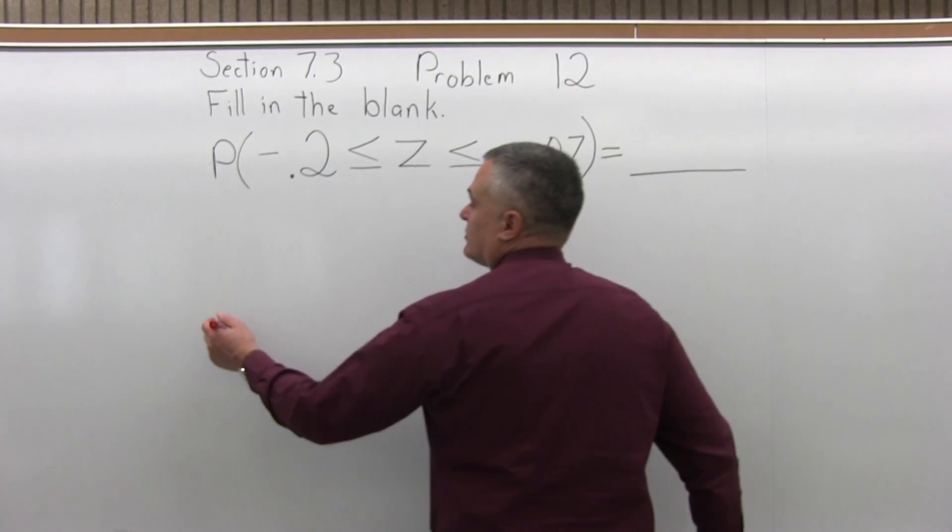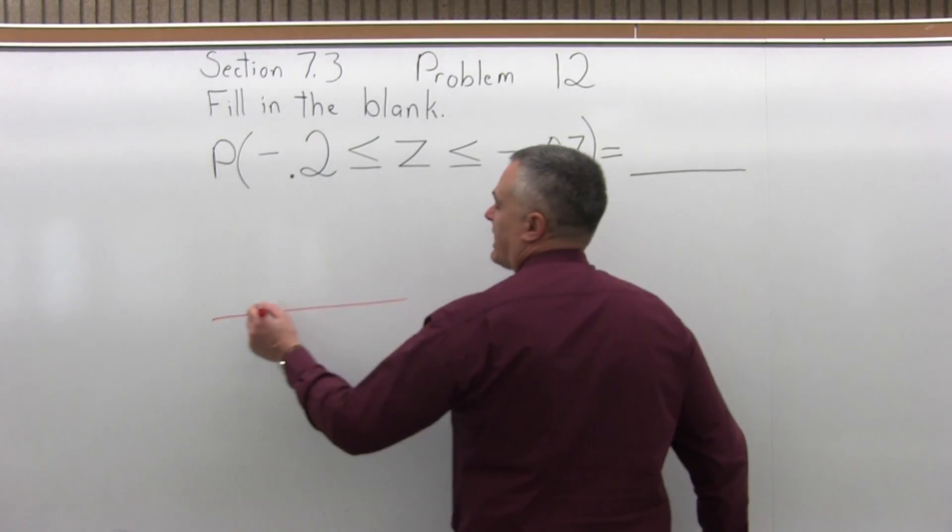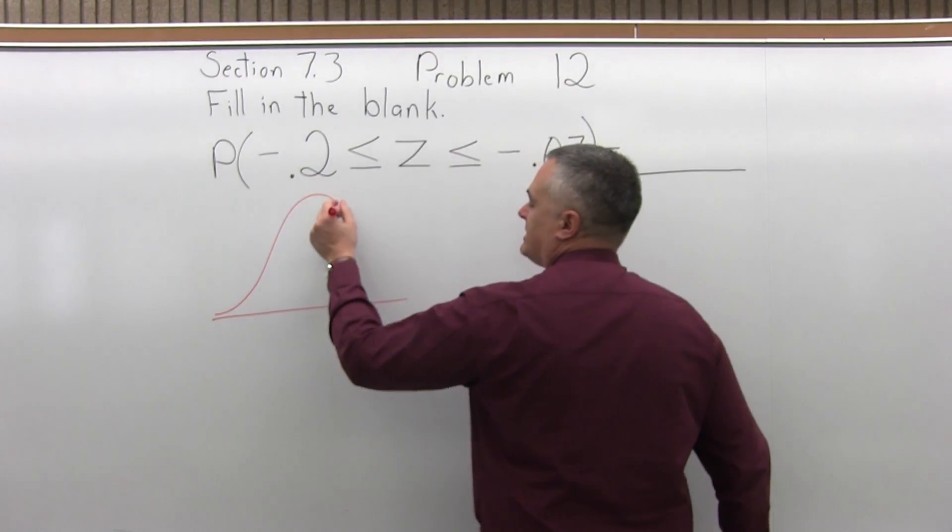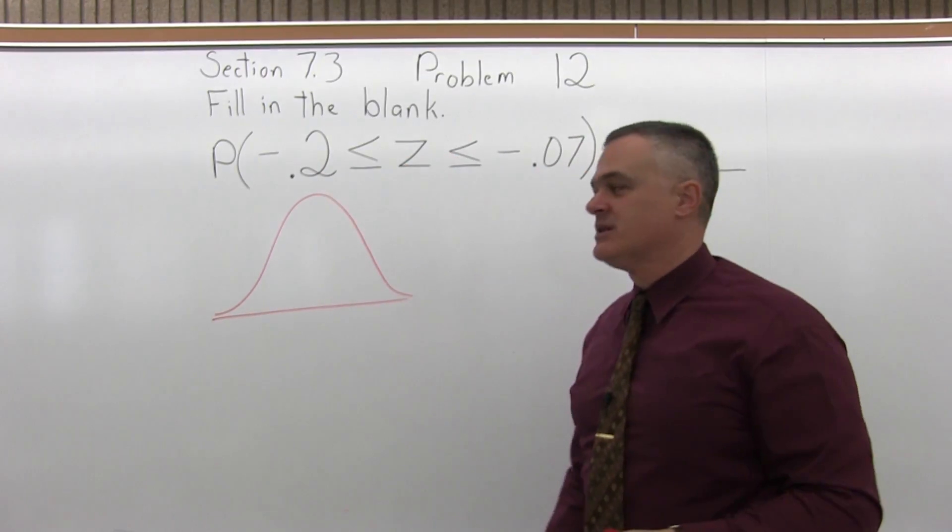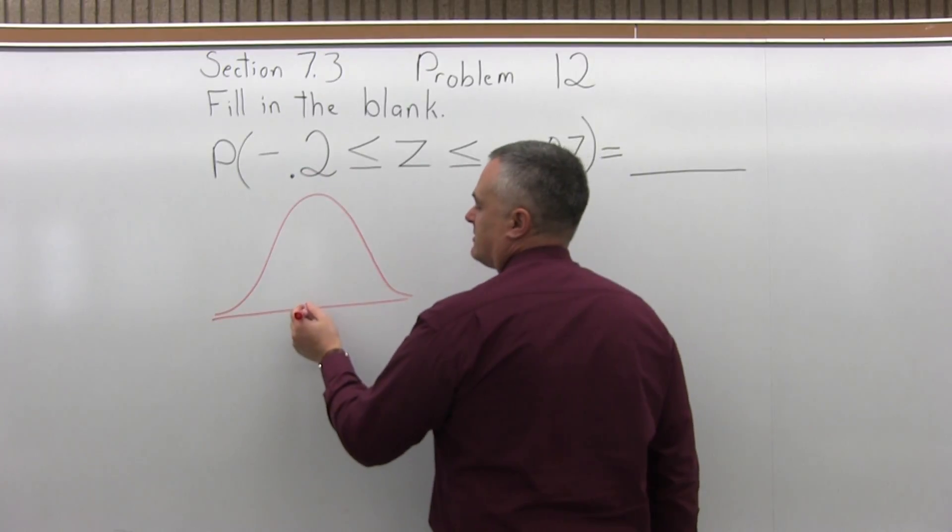So I like to start these with a graph. You don't have to. Basically this is an in-between type of question. We're going to find two chart values, subtract them. That's going to be the answer, but I think it helps if you can see your opponent.